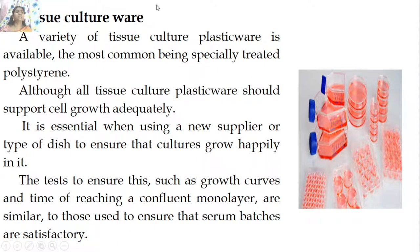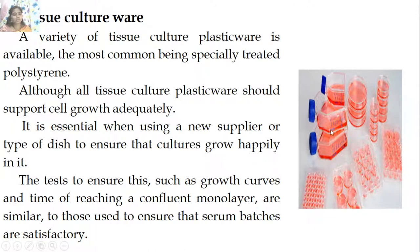A variety of tissue culture plastic ware is available, the most common being specially treated polystyrene. Although all tissue culture plastic ware should adequately support cell growth, it is essential when using a new supplier or type of dish to ensure cultures grow happily in it. Tests such as growth curves and the time of reaching confluent monolayer are used to ensure that serum batches are satisfactory for culture.